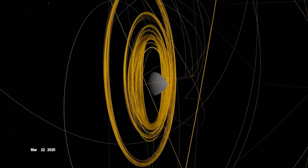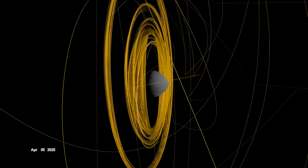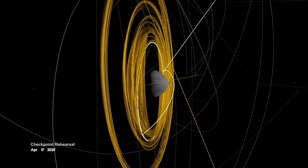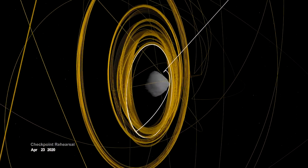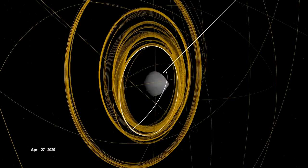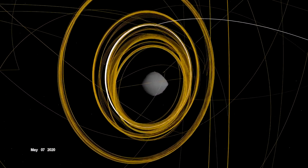In mid-April, OSIRIS-REx performed the first of two rehearsals prior to sample collection. It navigated to a predetermined checkpoint about 125 meters above Bennu, then descended to within 65 meters before backing away.